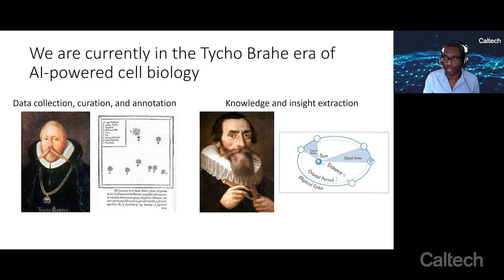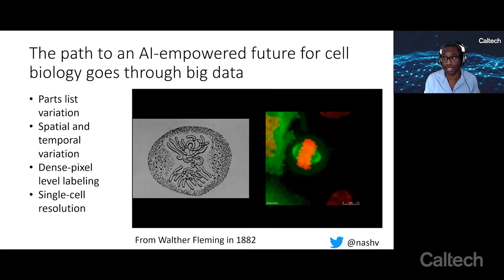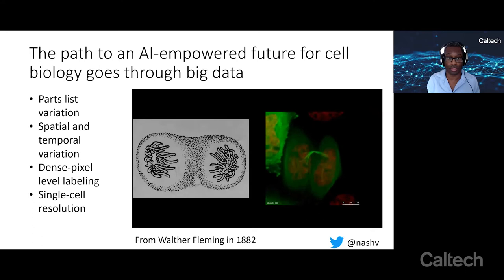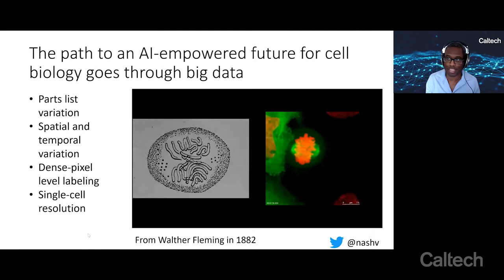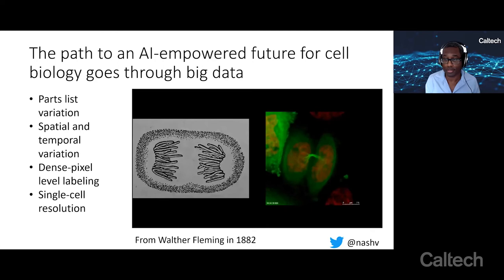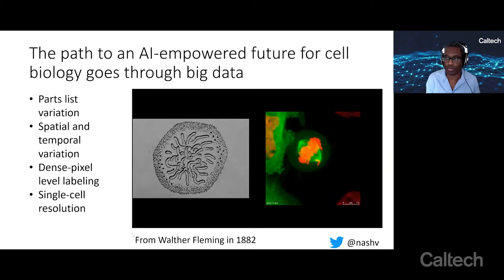It's really this phase that we're in. Because we don't have these large annotated data sets, the field is stuck as far as what we're able to get machine learning methods to do on real data. Part of what we think is necessary is to actually go through big data, not around it. Rather than thinking about how to get around the lack of labeled data, think about how to generate the labeled data we need. There's likely going to be a need for parts-list variation and spatial-temporal variation of biological systems, which puts you in the space of images. Labels will almost certainly need dense pixel-level labeling at single-cell resolution, because single cells are the fundamental unit of living matter.